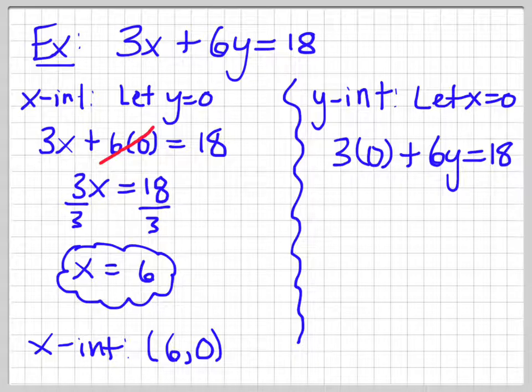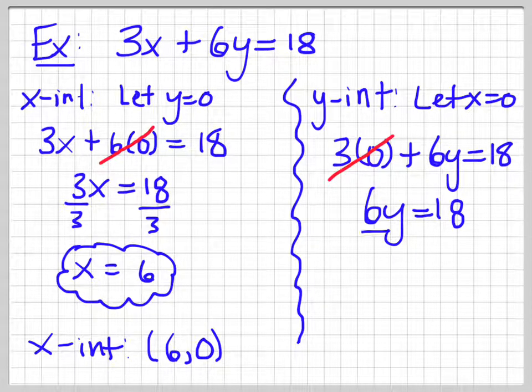So, again, this part goes away because it's 0. Then I'm left with 6y is equal to 18. Then I get y by itself, divide both sides by 6. Then I'm left with y is equal to 3.